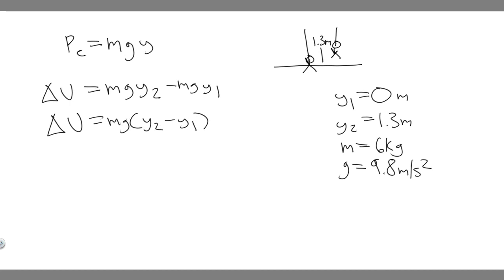All we have to do now is just plug in. So the change in U, which is the change in the gravitational potential energy, is equal to the mass, which we know is 6, times g, which is 9.8, and then y2 minus y1. So 1.3 minus 0, which is just 1.3. If we go ahead and do this, you do 6 times 9.8 and then multiply it by 1.3. You're going to get that equals 76.44.